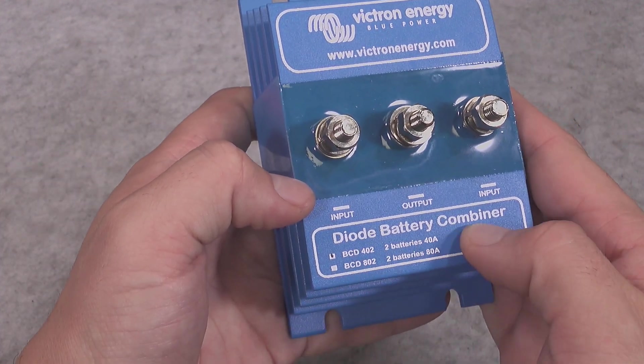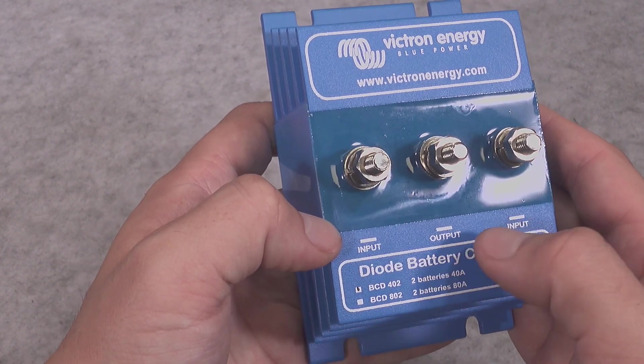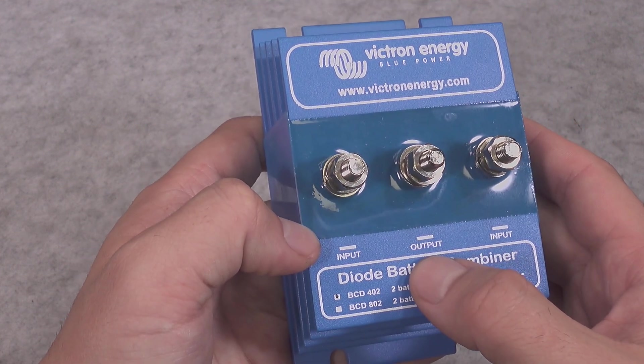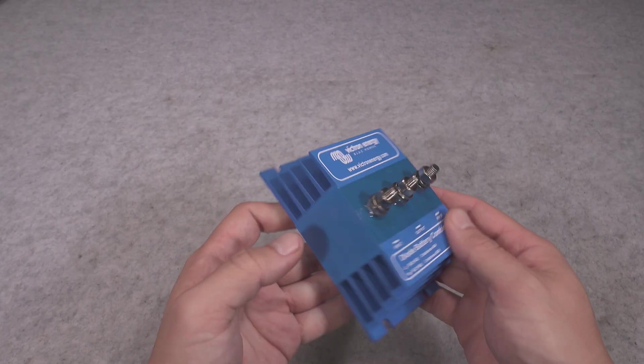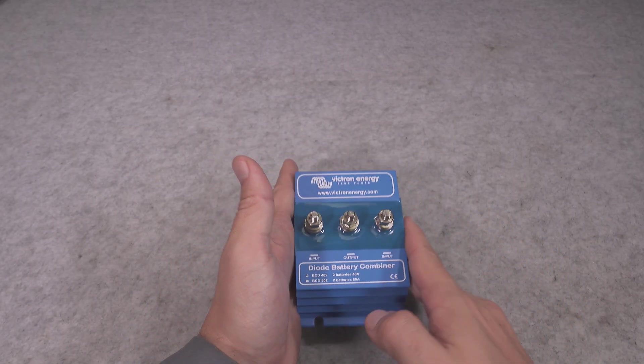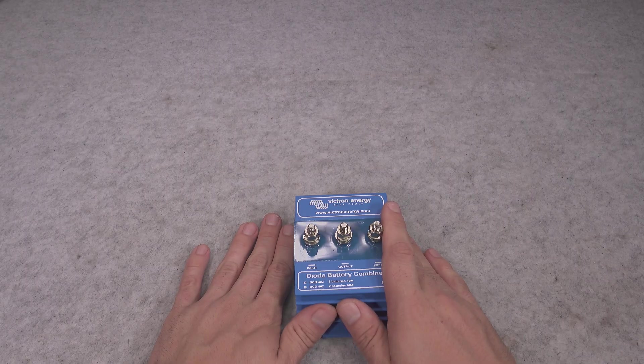Diode battery combiner. We've got two inputs and one central output, so I expect they are going to be just beefy diodes inside. So let's try to connect it.